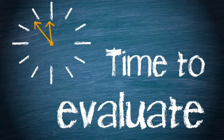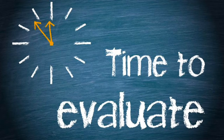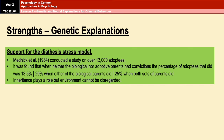Those are your genetic and neural explanations for crime. We're now going to move on to six evaluation points — enough to cover potential essays on both genetics and neural explanations. The first evaluation point is a strength supporting the diathesis stress model. Mednick et al. in 1984 studied over 13,000 adoptees and found that when neither biological nor adoptive parents had convictions, 13.5% of adoptees did. When biological parents had a conviction, that rose to 20%, and to 25% when both sets of parents had convictions, showing inheritance plays a role but the environment can't be disregarded.